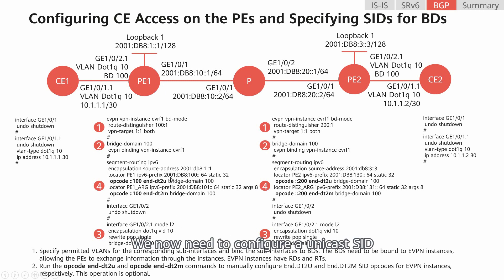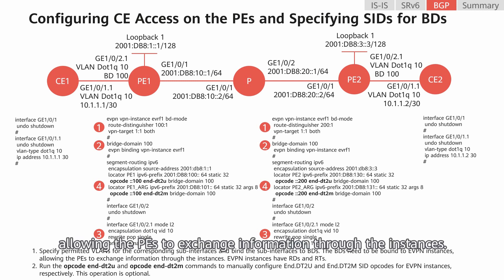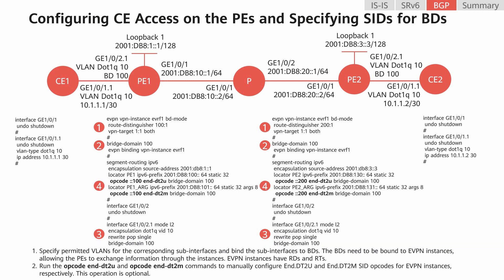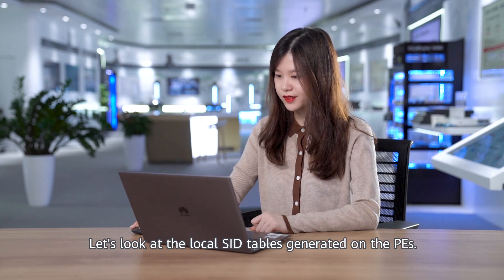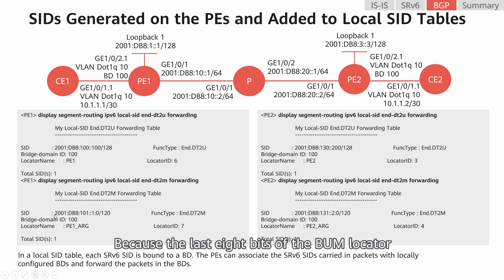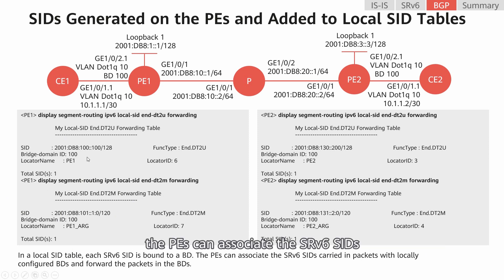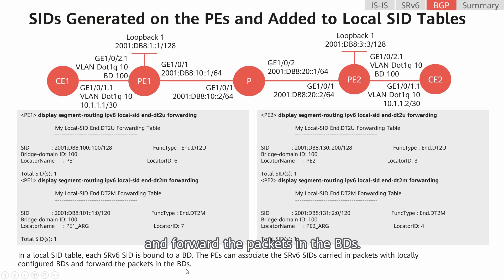We now need to configure a unicast SID and then a BUM SID for the BD under the locator. In addition, we need to specify a permitted VLAN for the corresponding subinterface and bind the subinterface to the BD. BDs need to be bound to the EVPN instances, allowing the PEs to exchange information through the instances. P1's local SID table shows that unicast End.DT2U and BUM End.DT2M SIDs have been generated. Because the last 8 bytes of the BUM locator are allocated to the args field, the corresponding SID is generated accordingly. Each SID is bound to a BD, so the PEs can associate the SRV6 SIDs carried in packets with locally configured BDs and forward the packets in those BDs.